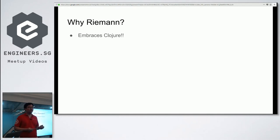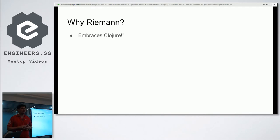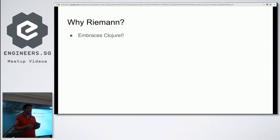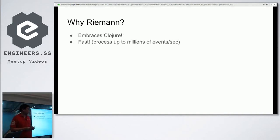Why would you want to choose Riemann? Firstly, it fully embraces Clojure — Riemann itself is written in Clojure, and to configure Riemann you write real Clojure programs. So if you're looking for a way to work Clojure into your existing stack at your workplace, this would be one way to do it. Riemann also comes with a fantastic API for making your stream processing code really concise yet readable.